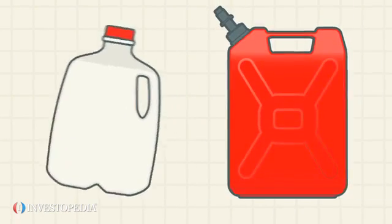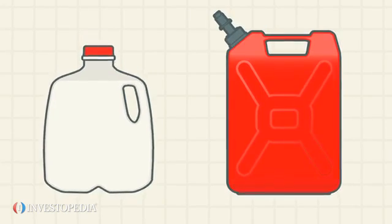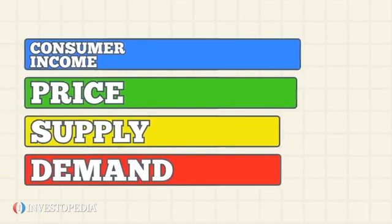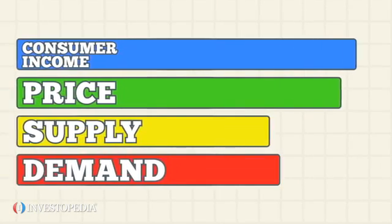Necessities such as milk and gasoline usually have low elasticity. This is because it takes a meaningful change in price or consumer income to change the amount demanded.